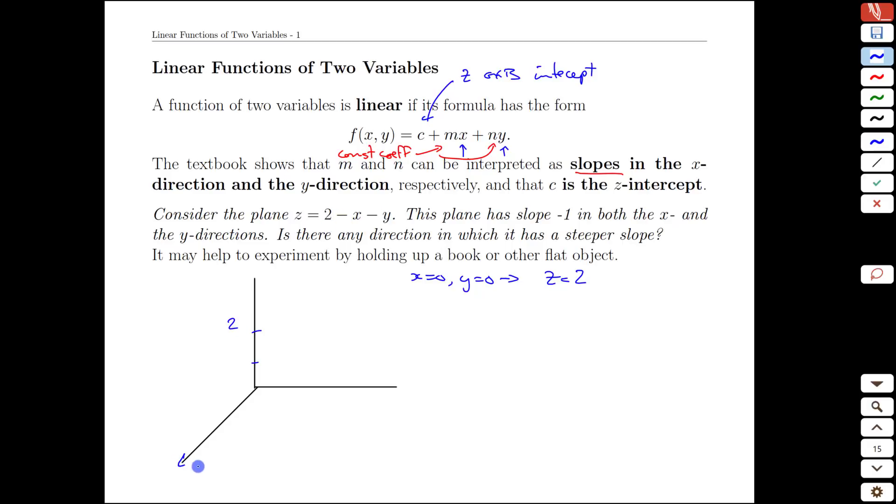We can then interpret the slopes if we label our axes as we usually do. The slope of negative 1 in front of the x means that for every step in the positive x-direction we're going to go down 1 in the z-direction. Well if that's the case we're going to get a straight line relating x and z that would look like a slope of negative 1.